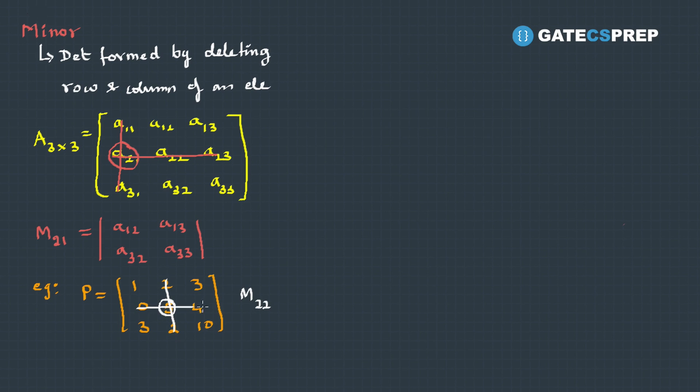We take the determinant of the remaining elements, which is 10 minus 9, and this is 1. The second concept we need to learn is an extension for the minor, it's called cofactor.